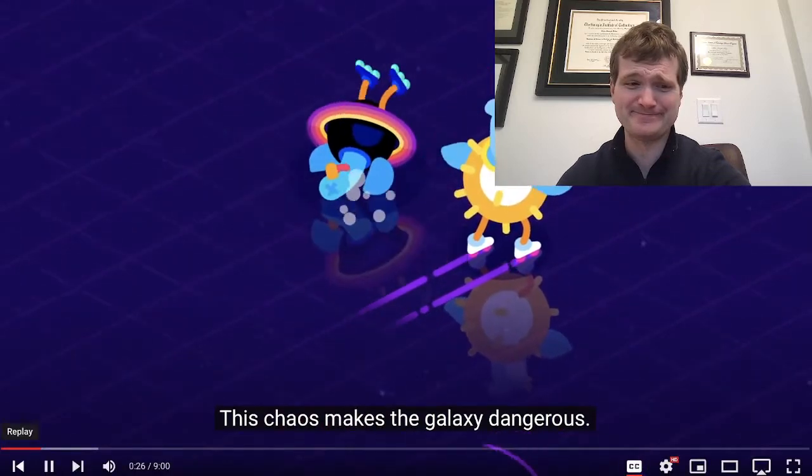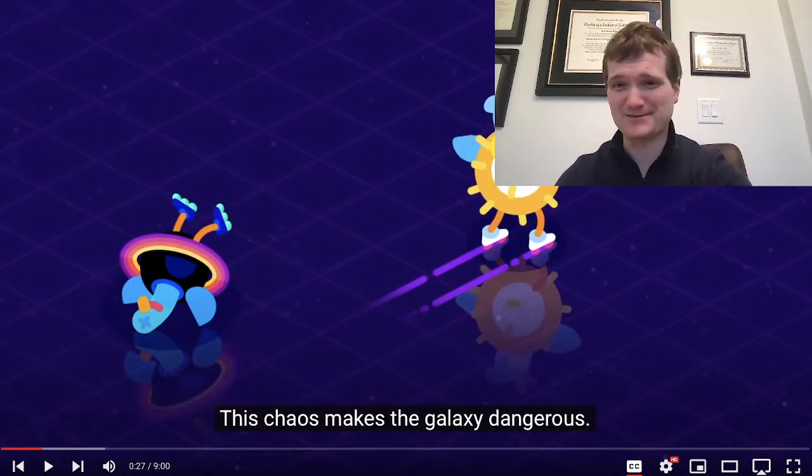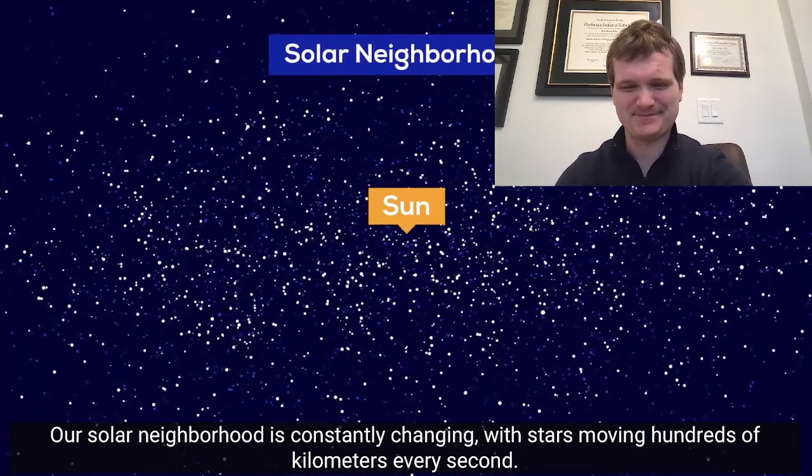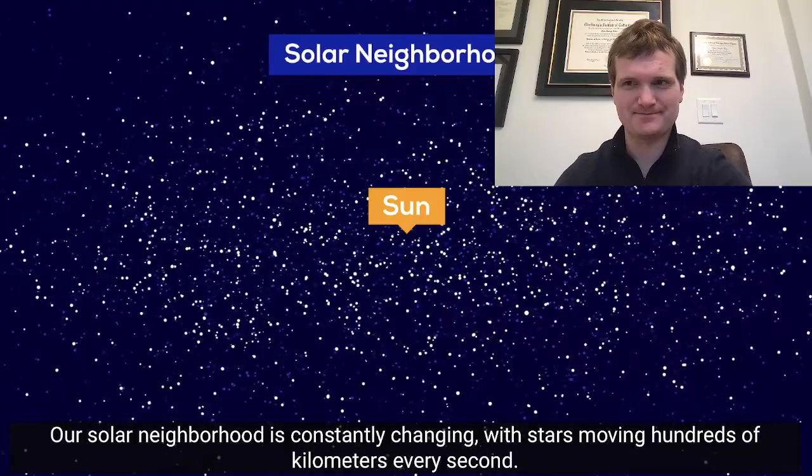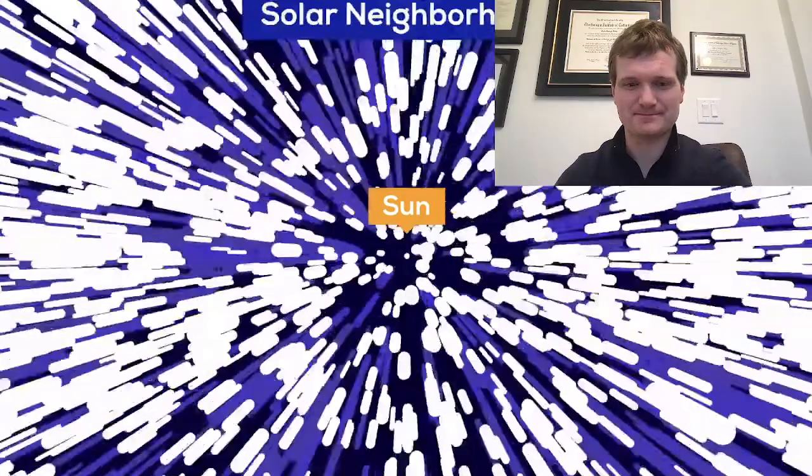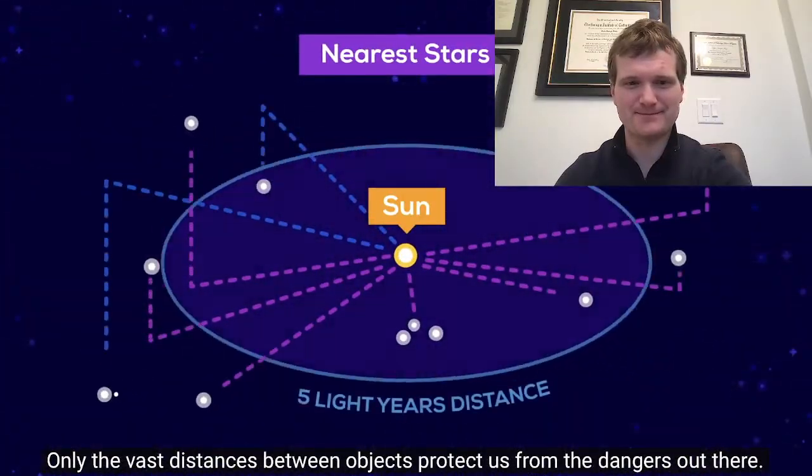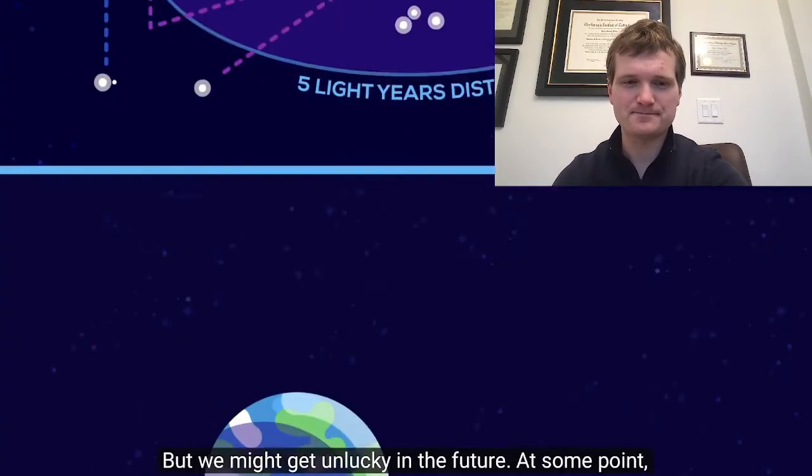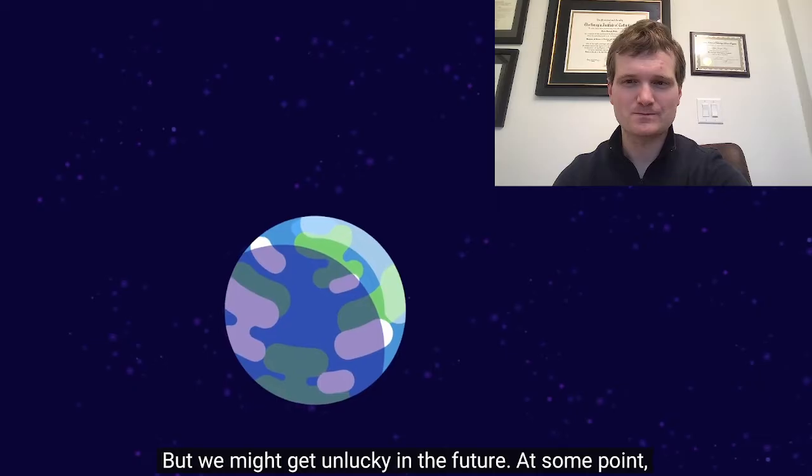We're toddlers getting drunk. Our solar neighborhood is constantly changing, with stars moving hundreds of kilometers every second. Only the vast distances between objects protect us from the dangers out there. But we might get unlucky in the future.